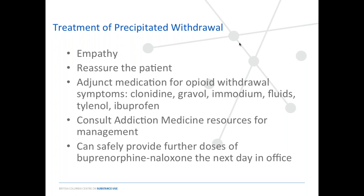There are also provincial resources. In Vancouver, the Rapid Access Addiction Clinic at St. Paul's Hospital and the START program for home-based buprenorphine naloxone inductions are available. Provincially, there's the RACE Line — you can Google it or use the app to contact someone from the service for support. Hopefully there will also be someone in your community who has an interest in this and may be able to guide you.